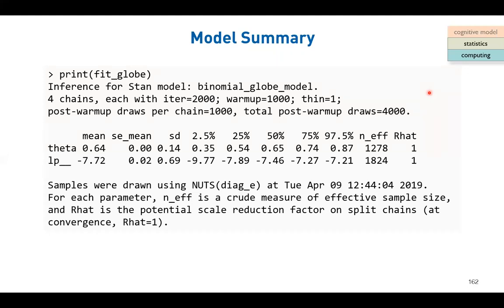The next step is to know the posterior distribution - the posterior shape of the unknown parameter theta. Before we get the plot, let's see the table first. The table gives useful numbers in terms of quantiles and summary statistics: the mean, standard error of the mean, standard deviation, and quantile cutoffs at 2.5%, 25%, 50%, 75%, and 97.5%.